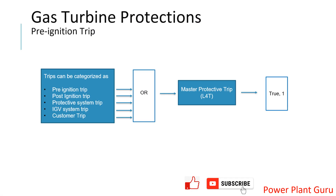As we can see in this slide, there are certain types of trips for gas turbine trip. Any one of these conditions, if true, will actuate L4T, which is the signal for gas turbine trip. Right now we will discuss only the pre-ignition trip.